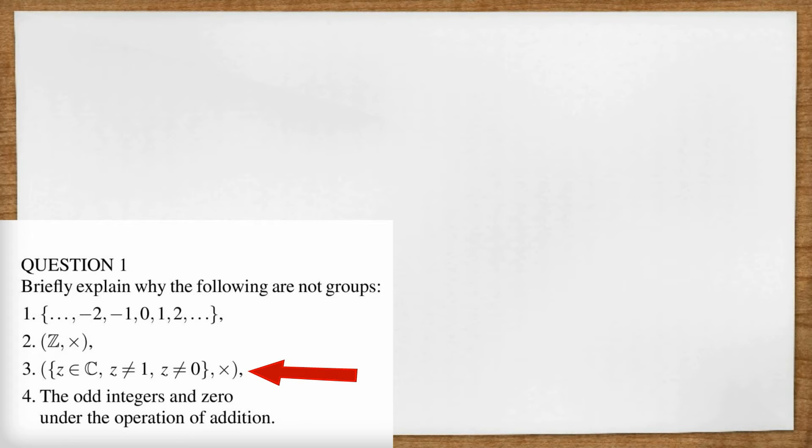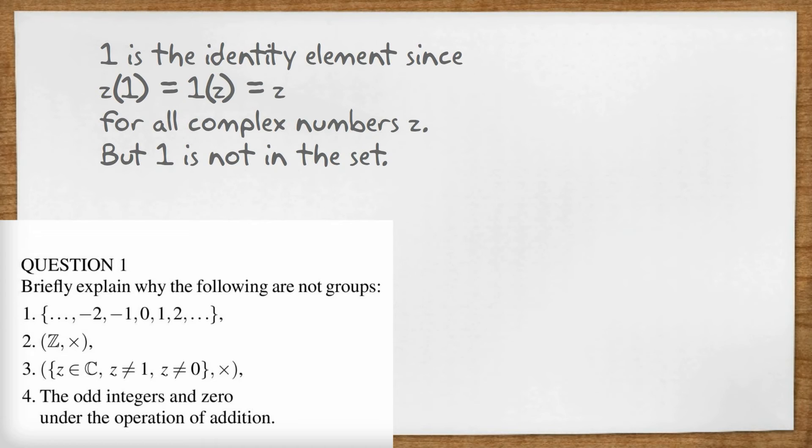On to part three, that funny C symbol is complex numbers so we're talking about all the complex numbers other than zero and one and we're using multiplication. Here I think the problem is the identity element. One is the identity element since Z times one equals one times Z equals Z for all complex numbers Z. But one is not in the set, it's specifically excluded. So answer, the set has no identity element.